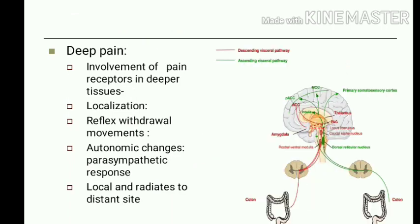The second variety is deep pain. Here there is involvement of pain receptors in the deeper tissues like periosteum, joints, and arterial walls such as falx cerebri or tentorium cerebri. Localization is poor, reflex withdrawal movements are not possible, and autonomic changes are like a parasympathetic response — decrease in heart rate, blood pressure, and respiratory rate. It is local as well as radiates to a distant site.